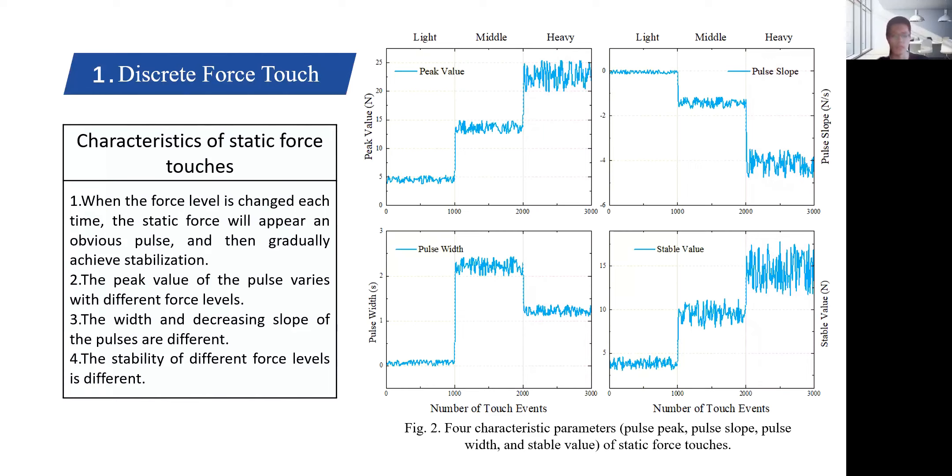Third, the width and decreasing slope of the pulses are different. The pulse width of the middle force is the longest, and the decreasing slope of the heavy force is the largest. Fourth, the stability of different force levels is different. In the case of the heavy force, the jitter is more obvious when the steady force is applied in a single time, and the fluctuation of the stable value is also larger.